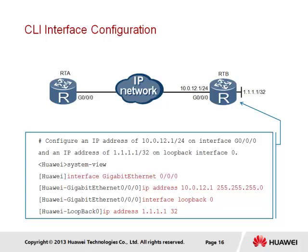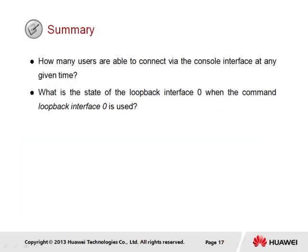We start off in a user view and transition into the system view, from which point we can then move down into the interface view via the command 'interface gigabitethernet 0/0/0', where we configure the IP address using the 'ip address' command followed by the IP address itself and the subnet mask. With the loopback interface, we show an alternative method — using the 'interface loopback 0' command to move to the interface view for the loopback interface, following which the same 'ip address' command is configured for 1.1.1.1, but instead of using a subnet mask we use a prefix of /32.